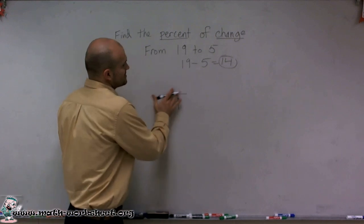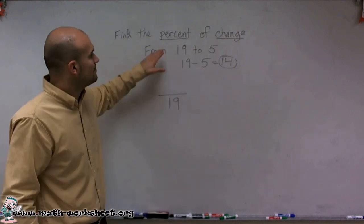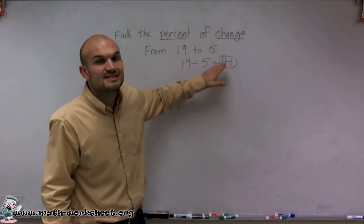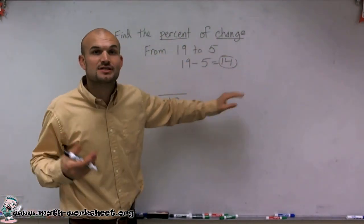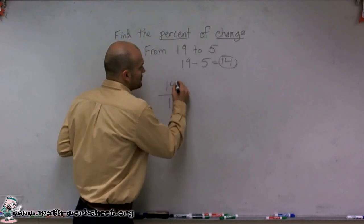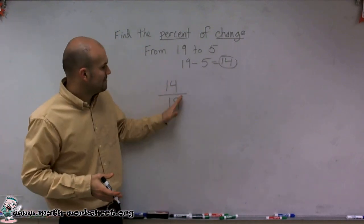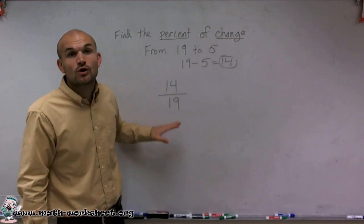So what we're going to look at is out of the total amount of 19, right? 19 is our total. The number of sticks or whatever we're talking about, the number that changed is going to be 14. So I'm going to create a ratio to represent that. And so what that means is I had a change of 14 out of a total of 19.